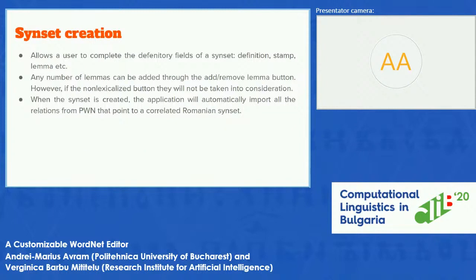The synset creation is straightforward. You are directed to a page where you complete the definitional fields of the synset — its definition, lemmas, and also the stamp. You can add any number of lemmas through a button and also remove them. There is also a non-lexicalized button; if you check it, the respective synset will not have any lemmas. When the synset is created, the application will automatically import all the relations from the Princeton WordNet that are linked to already implemented Romanian synsets.